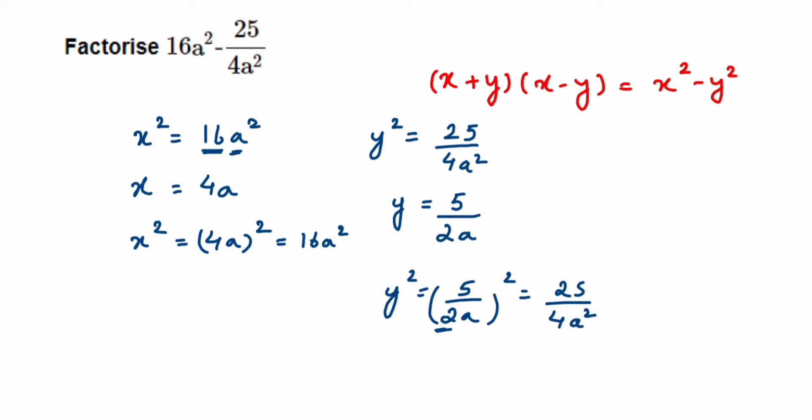We got x and y values. Therefore, 16a² minus 25 upon 4a² will be equal to x² minus y².